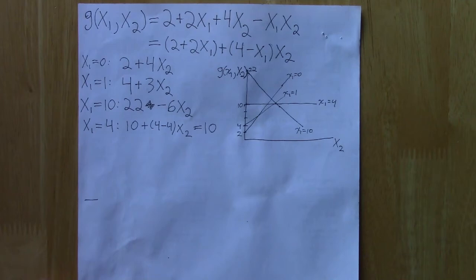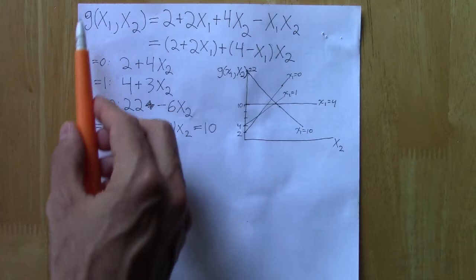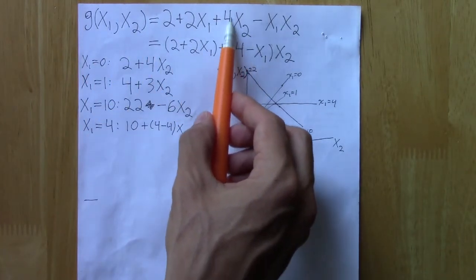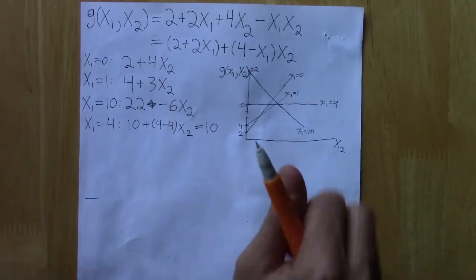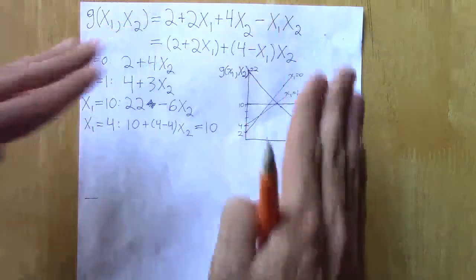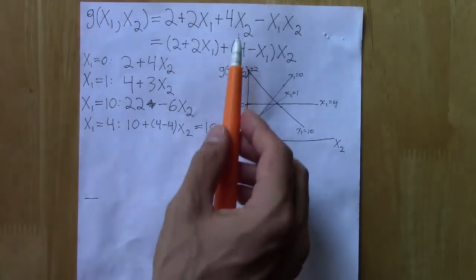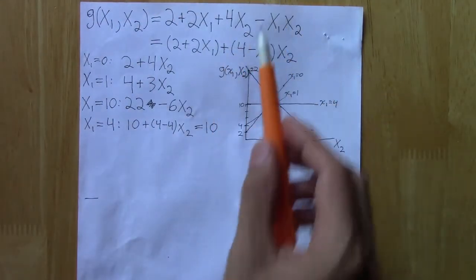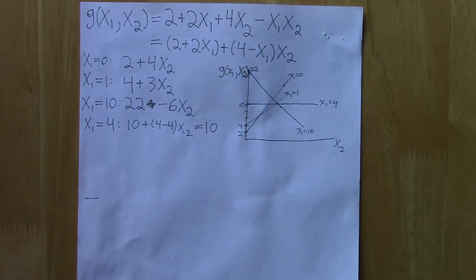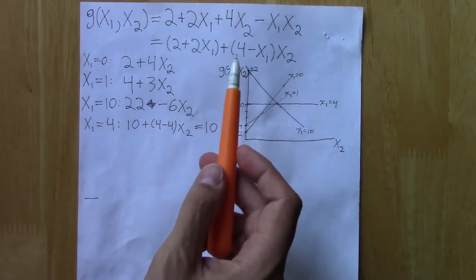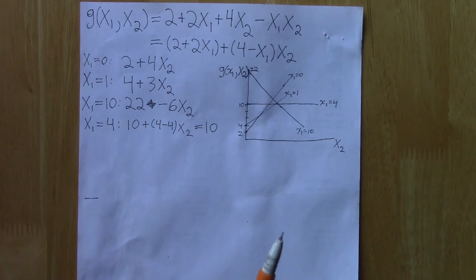One trap people fall into often is when thinking about the relationship between the function or the outcome variable and x₂, they'll just focus in on this linear term here, this positive 4 coefficient. So in this case, if you did that, it would seem like there's a positive relationship between x₂ and the outcome.